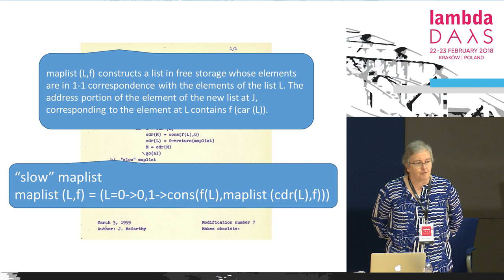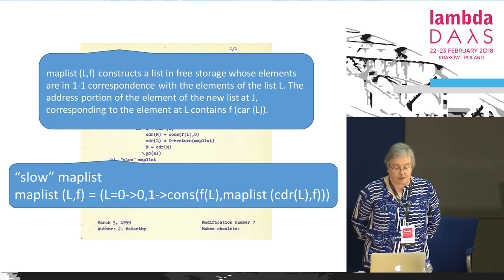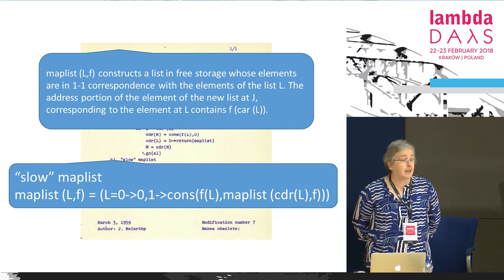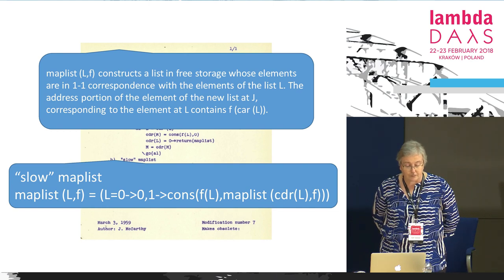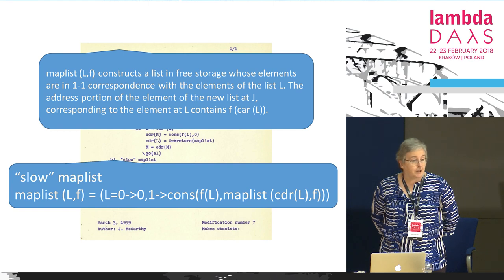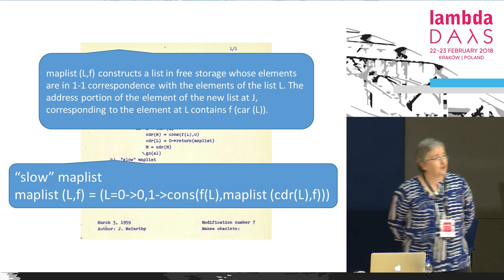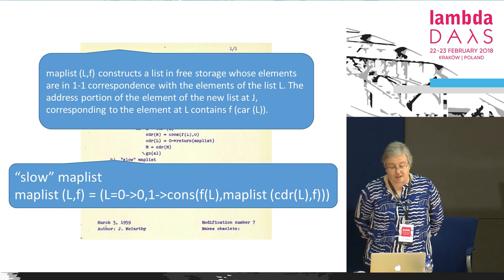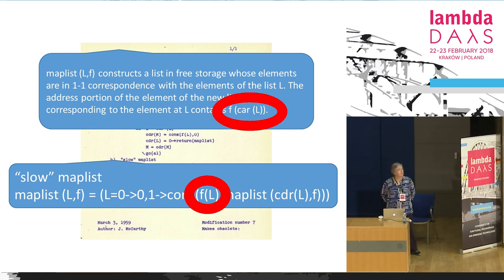The documentation says: 'maplist of L, F constructs a list in free storage whose elements are in one-to-one correspondence with the elements of list L. The address portion of the elements of the new list at J, corresponding to the element at L, contains F of car of L.' Car means head — the first element of the list in Lisp. The implementation, called 'slow map list,' says: if L is empty, return the empty list; otherwise return cons of F of L and maplist of cdr of L and F. This doesn't quite match the documentation — there's a mismatch.